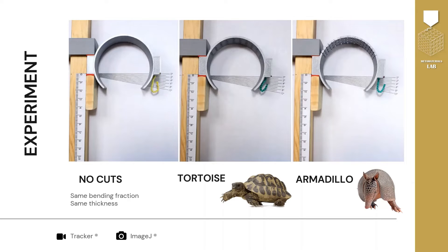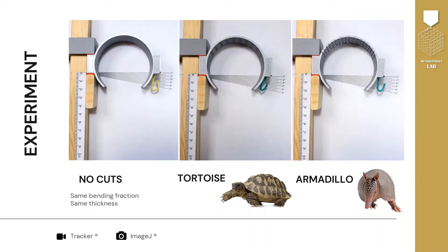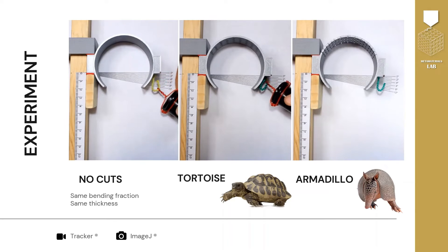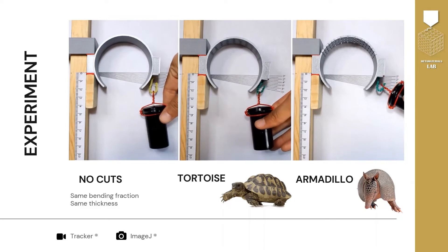Simulations were replicated in an experiment with 3D printed joints. The samples in the video have the same bending fraction and the same thickness. The first one is just compliant.